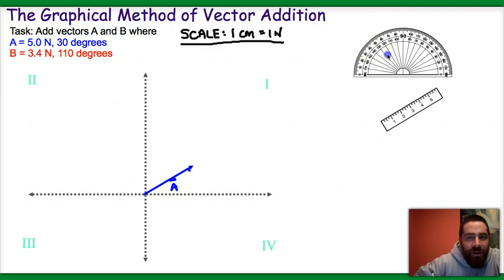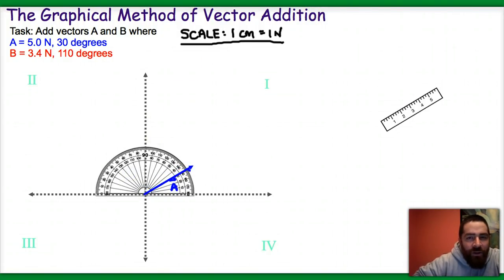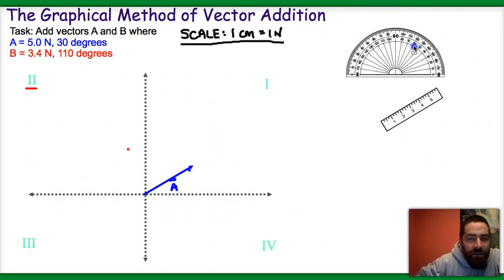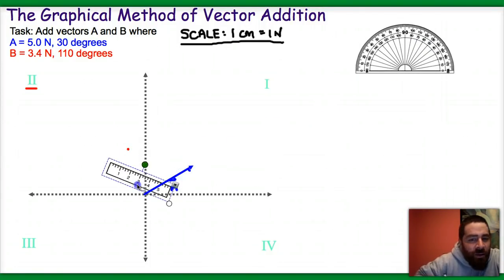So I could bring my protractor back into the game here, mark off 110 degrees. Of course, that's going to be here in the second quadrant. So I'll take a look at 110 degrees. I've marked my protractor, and now I can move it back.